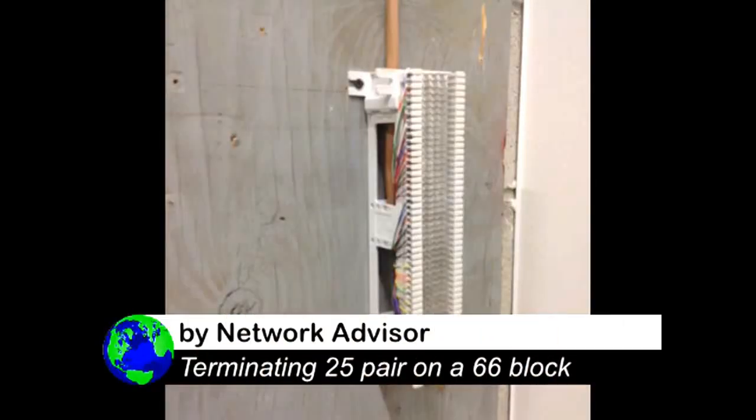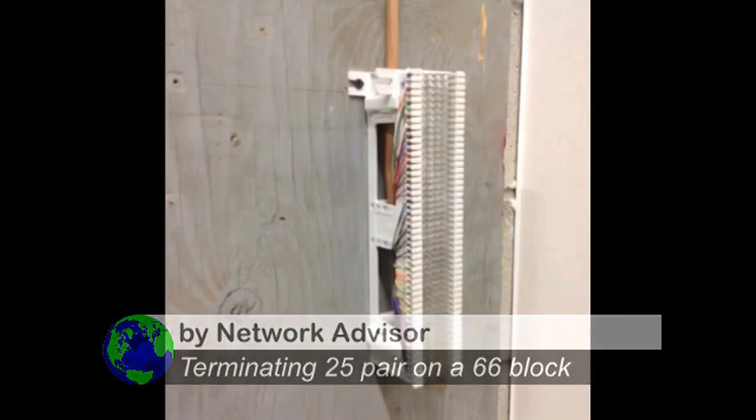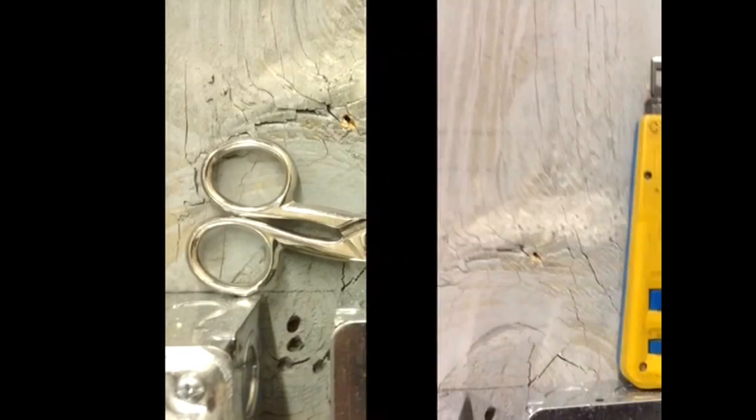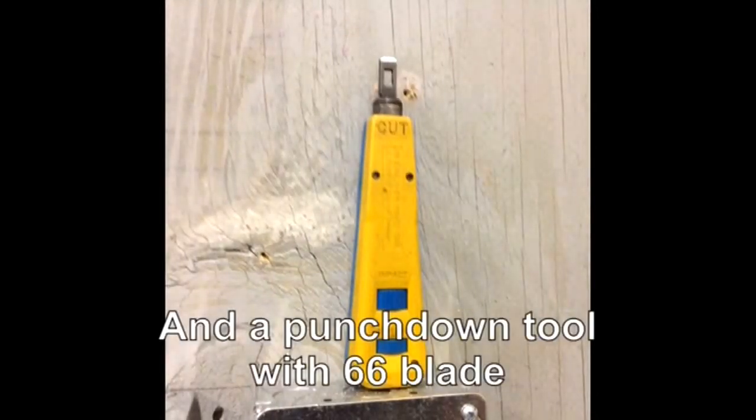This is a 66 block and we're going to be terminating a 25 pair cable onto it. You'll need lineman scissors and a 66 punch down tool.